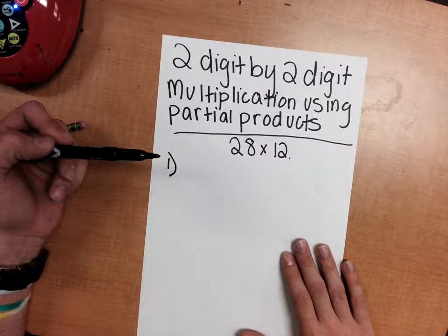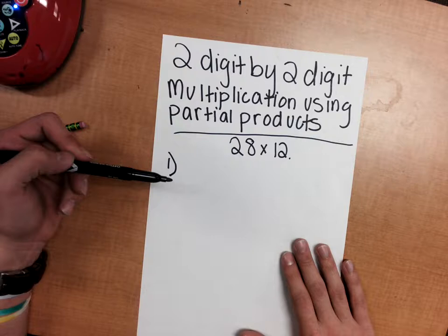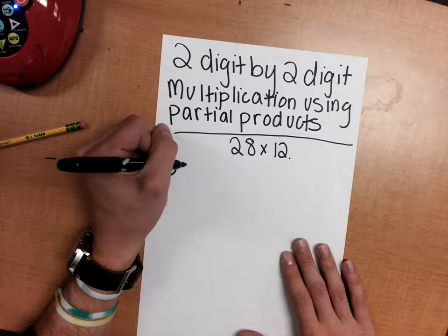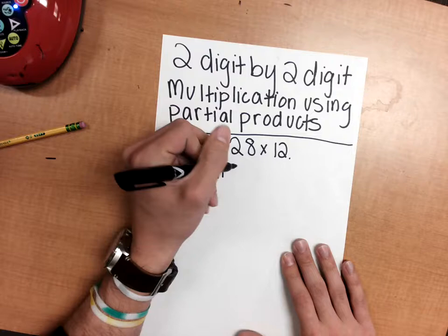Our first step, regardless of how many digits we're using, whenever we're doing partial products, is to put all numbers into expanded form.